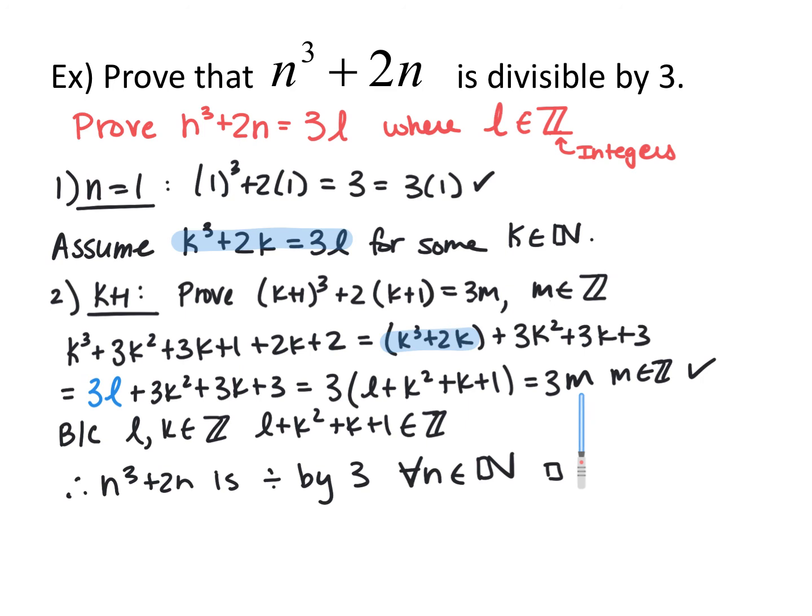Therefore, we've proved it for k plus 1, which means n cubed plus 2n is divisible by 3 for all n in the natural numbers. In summary, proof by induction works as follows: prove it's true for n equals 1, assume it's true for some n in the natural numbers, then prove it's true for n plus 1. If you can fulfill both of those conditions, you've proved it true for all n in the natural numbers.